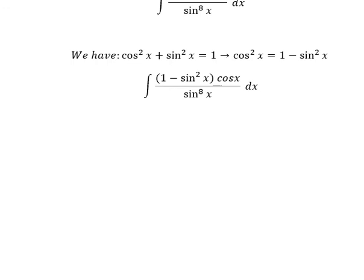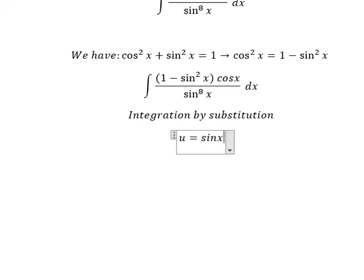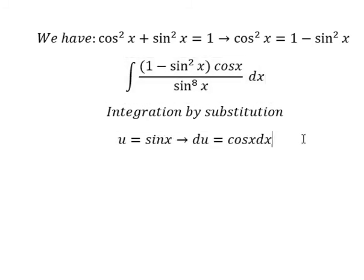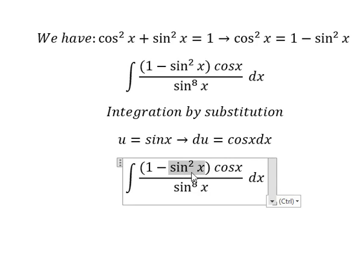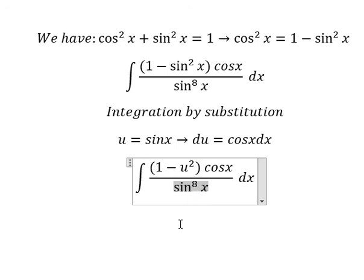Next, we can use integration by substitution. I will set u equals sine x. We need to take the first derivative of both sides — the first derivative of sine x gives cosine x. So this one we change to u, and we have u squared. This one we change to u to the power of 8, and cosine x dx we change to du.